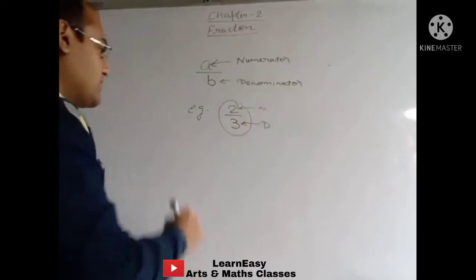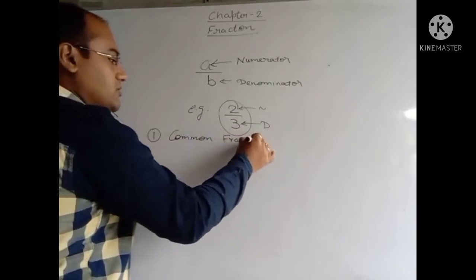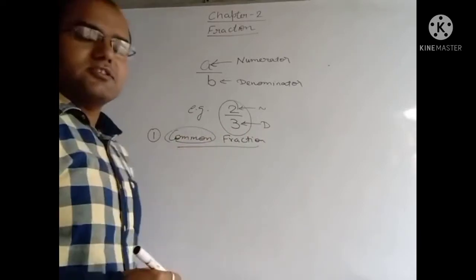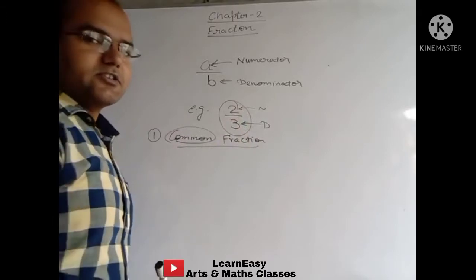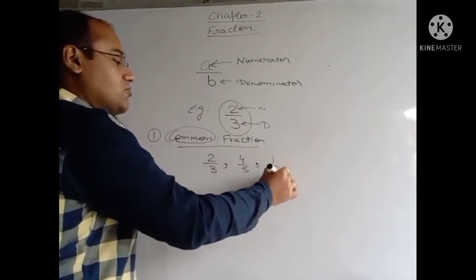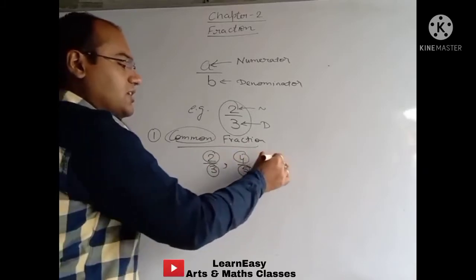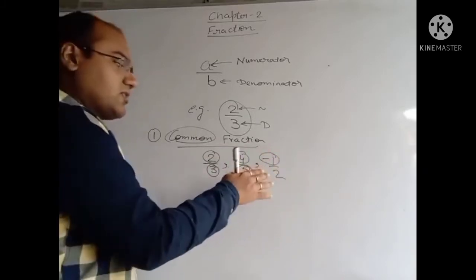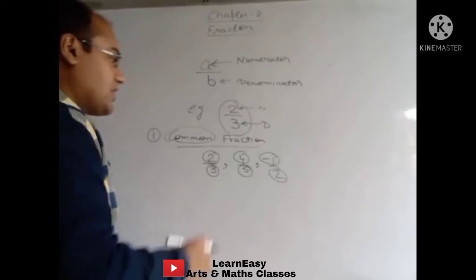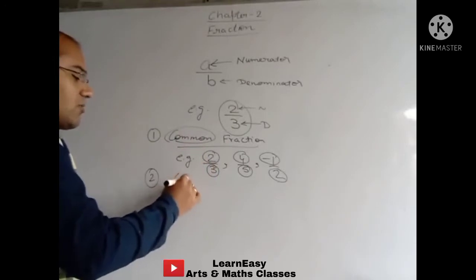Now, types of Fractions. The first type is Common Fractions. As the name denotes, Common Fractions are all those fractions in which the numerator and denominator are integer values. For example, 2 upon 3, 4 upon 5, 1 upon 2 — here the numerator as well as denominator are both integers. Integers means negative values can also be taken. If both numerator and denominator are integers, such fractions are known as Common Fractions.